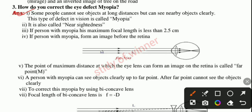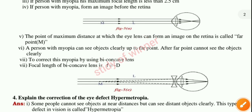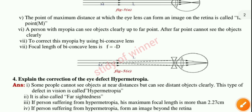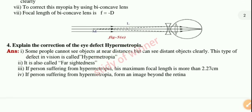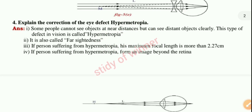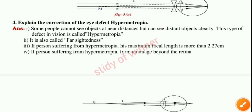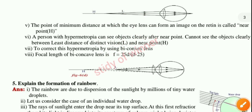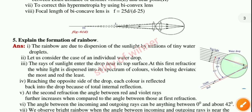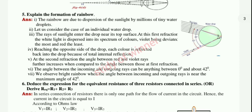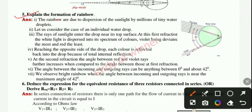This question paper PDF is available on our Telegram group — the link is in the description. Join our Telegram group to get this question paper. Next, question four and question five: explain the formation of rainbow.